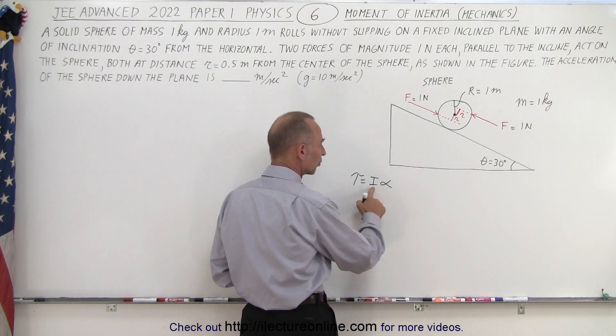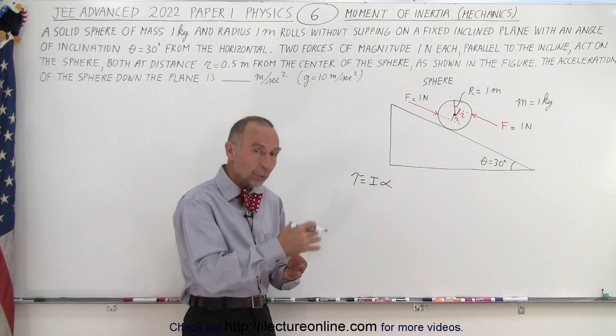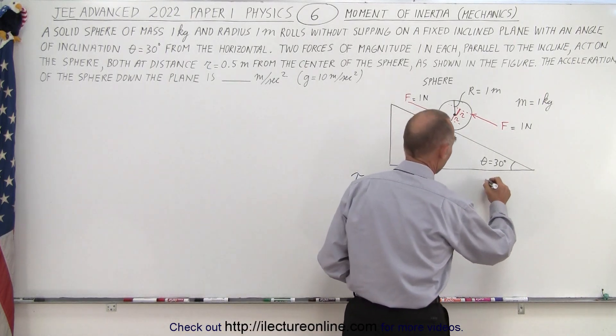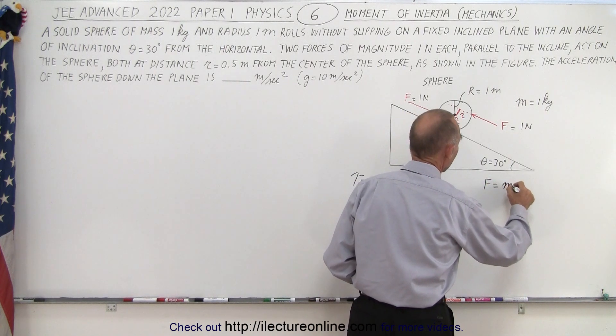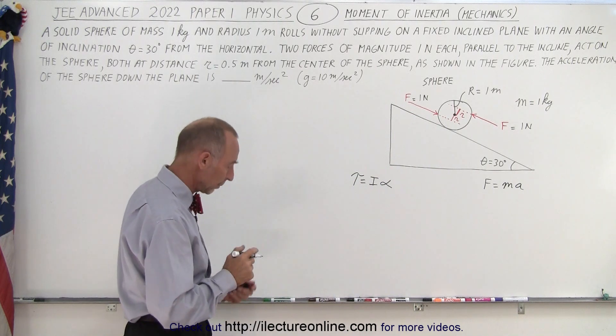where I is the moment of inertia and alpha is the angular acceleration. It is essentially the rotational equivalent of this equation, F equals ma. And it turns out we're going to need both of those equations in order to solve the problem.